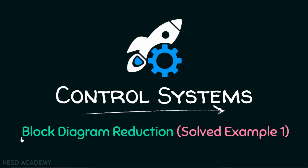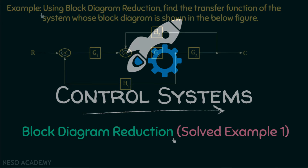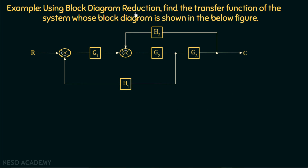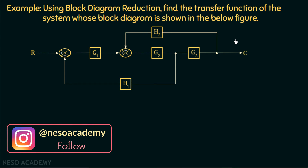In this presentation, we are going to discuss one example based on block diagram reduction. Using block diagram reduction, find the transfer function of the system whose block diagram is shown in the below figure. We need to find out the overall transfer function by using the block diagram reduction rules.